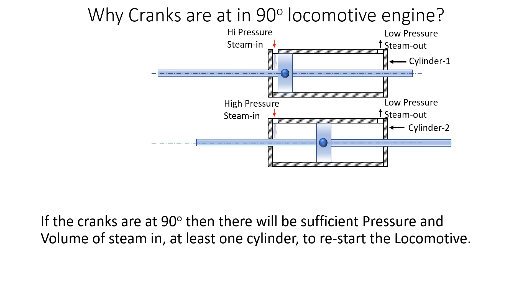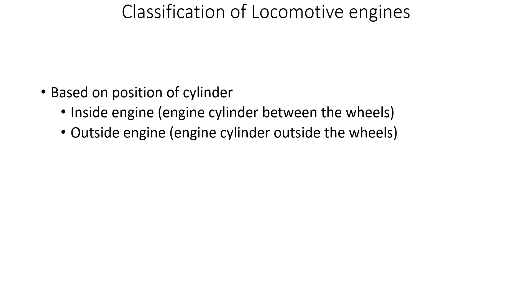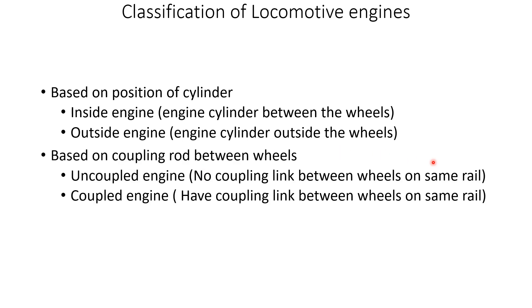Now let's understand the classification of locomotive engines based on cylinder position. Inside engines have the cylinders between the wheels; outside engines have the cylinders outside the wheels. In many locomotives a coupling rod connects wheels on the same track, giving uncoupled engines (no coupling link between wheels on the same rail) and coupled engines (with a coupling link between wheels on the same rail).